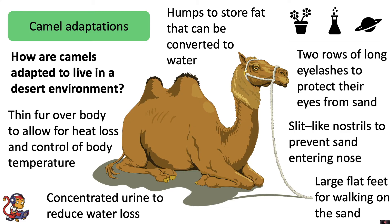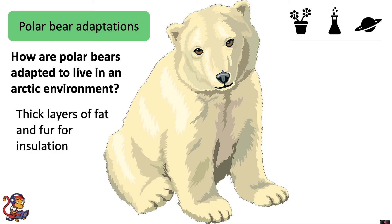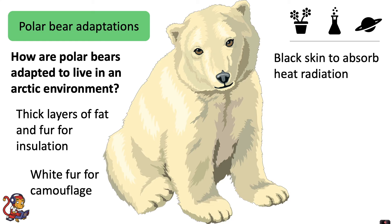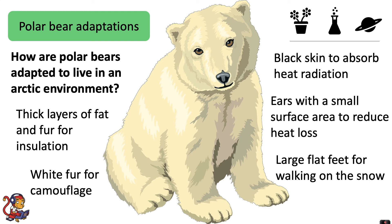Camels can survive in the desert with little water and scarce food, whereas other animals could not. Now think about how polar bears are adapted to live in an arctic environment. The main adaptations include thick layers of fat and fur for insulation, white fur for camouflage, black skin to absorb heat radiation, ears with a small surface area to reduce heat loss, large flat feet for walking on snow, and large claws for catching prey.